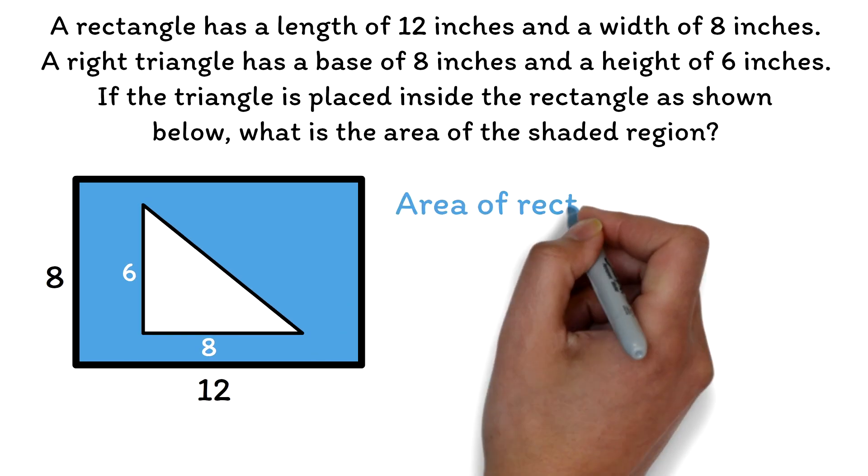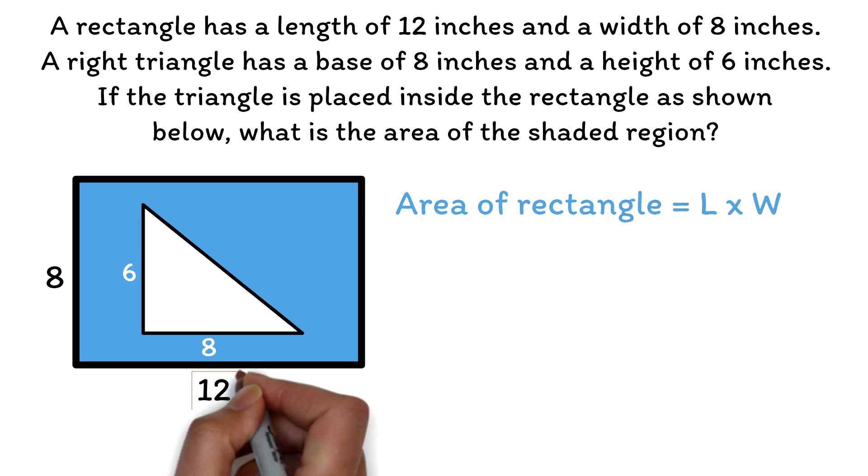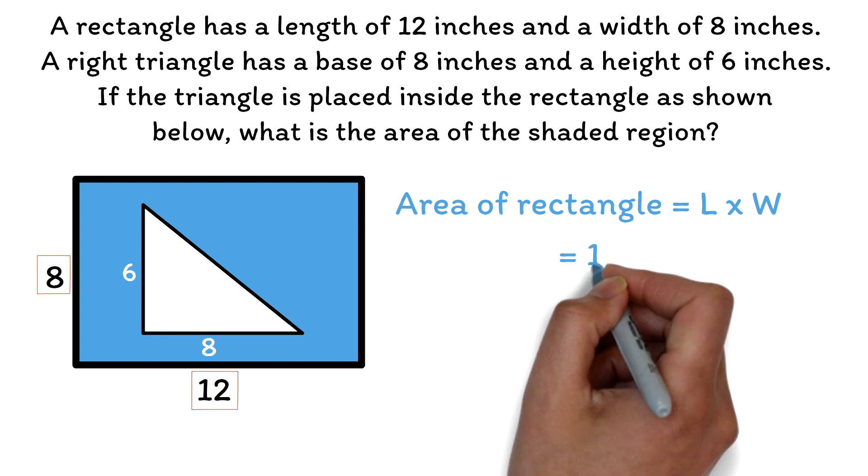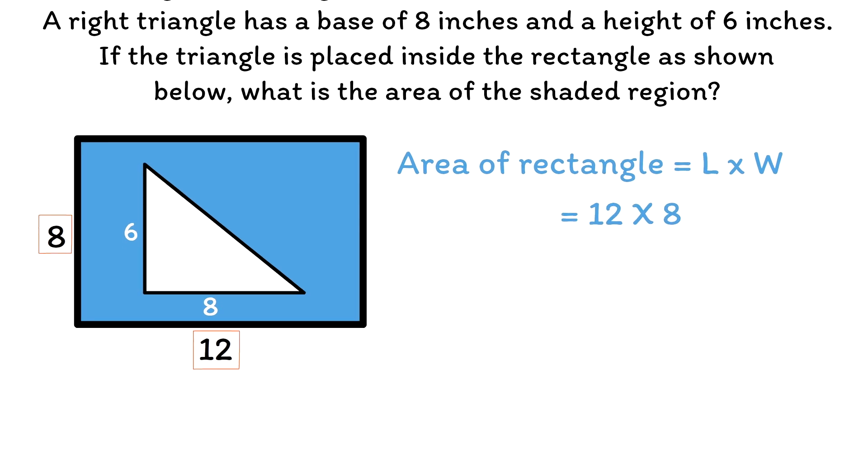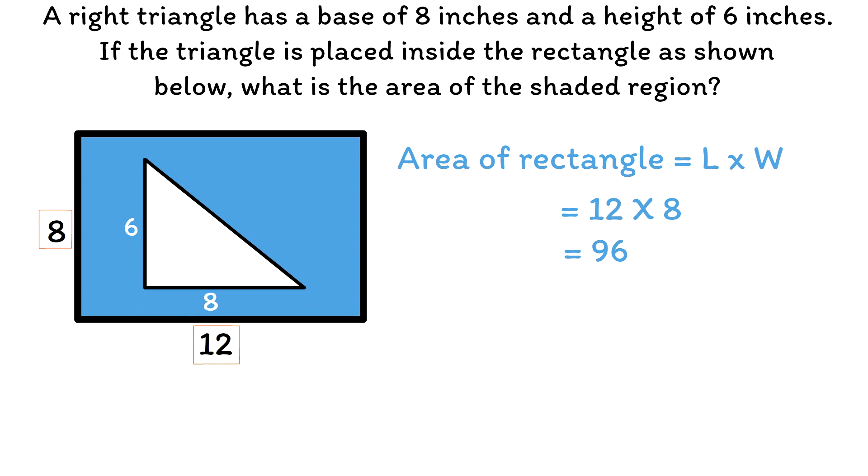The area of a rectangle is length times width. Our length is given as 12 and width 8, and that gives us 12 times 8. 12 multiplied by 8 is 96. Since the unit is in inches and we are finding area, we will get 96 inches squared as the area for the rectangle.